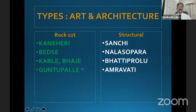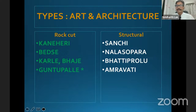There are two types — rock cut and structural. For example, rock cut architecture includes Kaneri Caves, Bedse Leni, Karle, Vaje, and Guntupalle. Guntupalle is the combination of rock cut as well as structural, and I will show you the difference. For structural, you come to the Sanchi Stupa, Nala Supara Stupa, Bhattiprolu, and Amaravati. I heard that you have studied South Indian architecture also, that's why I mentioned the names of South India — Bhattiprolu and Amaravati. So you will understand the difference between the two types of architecture.